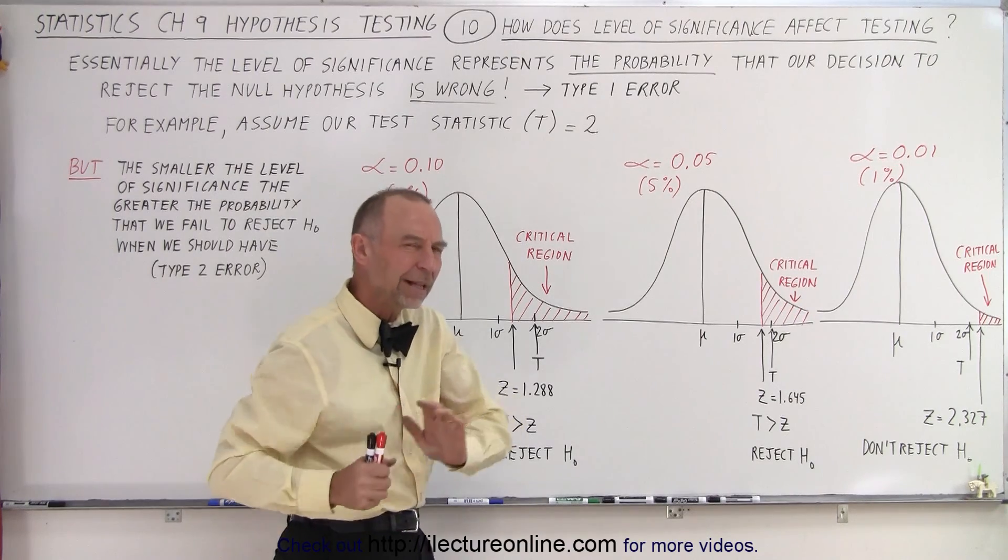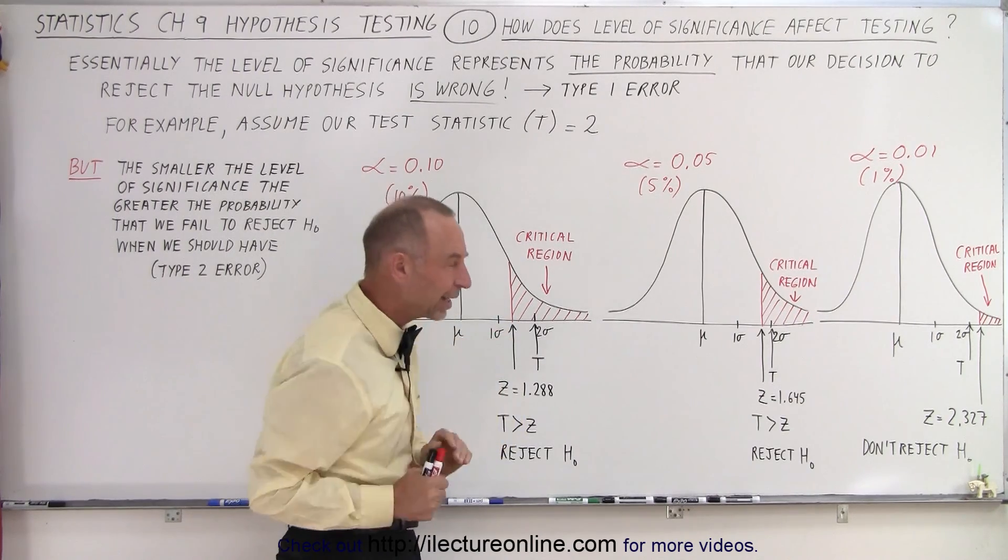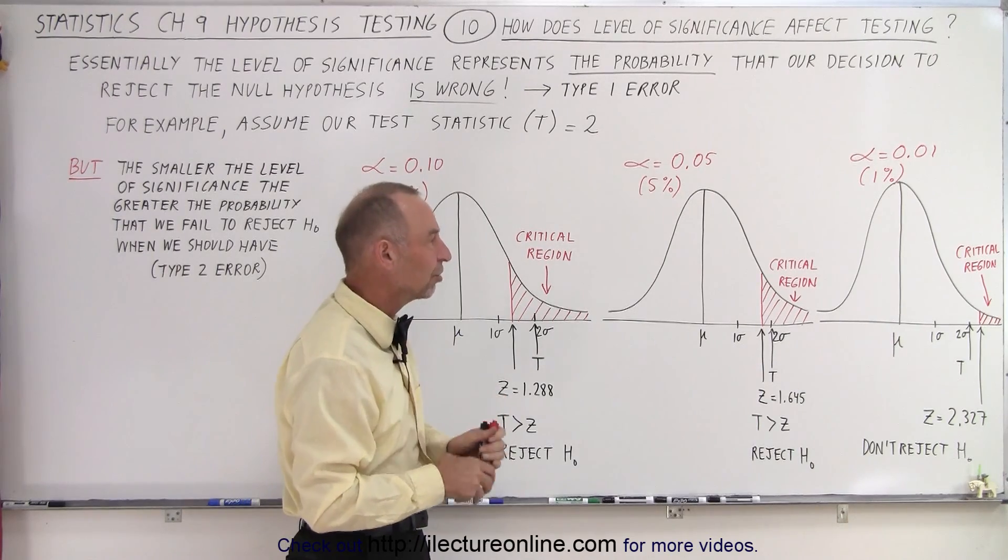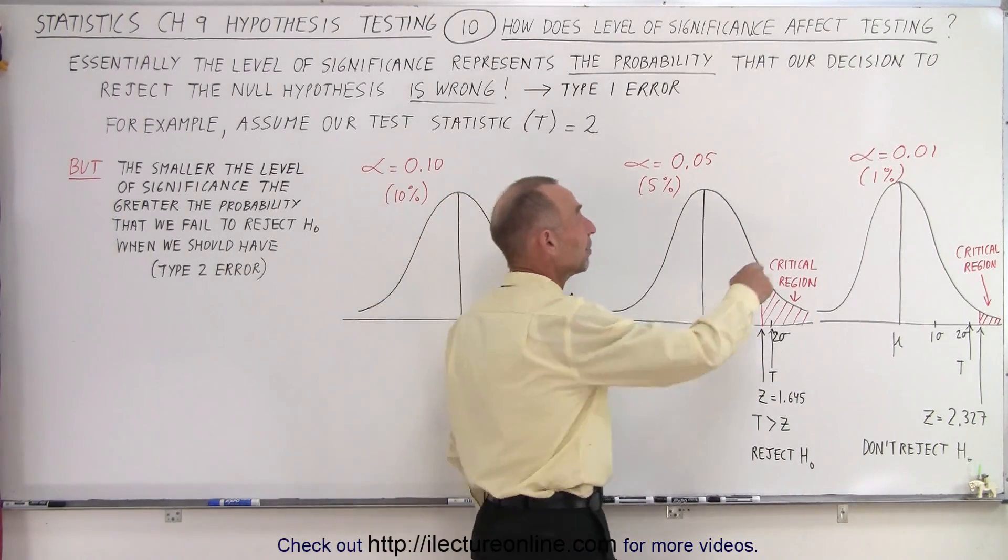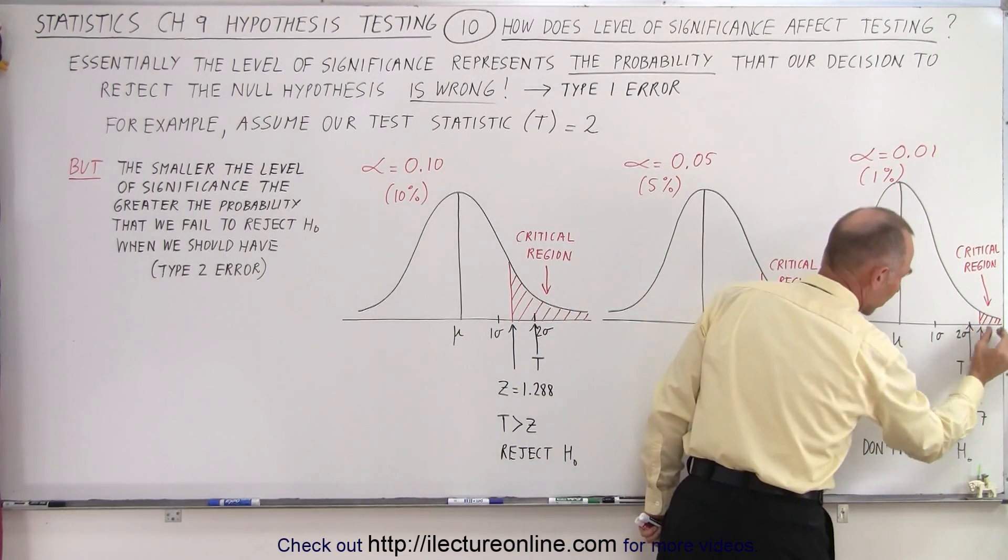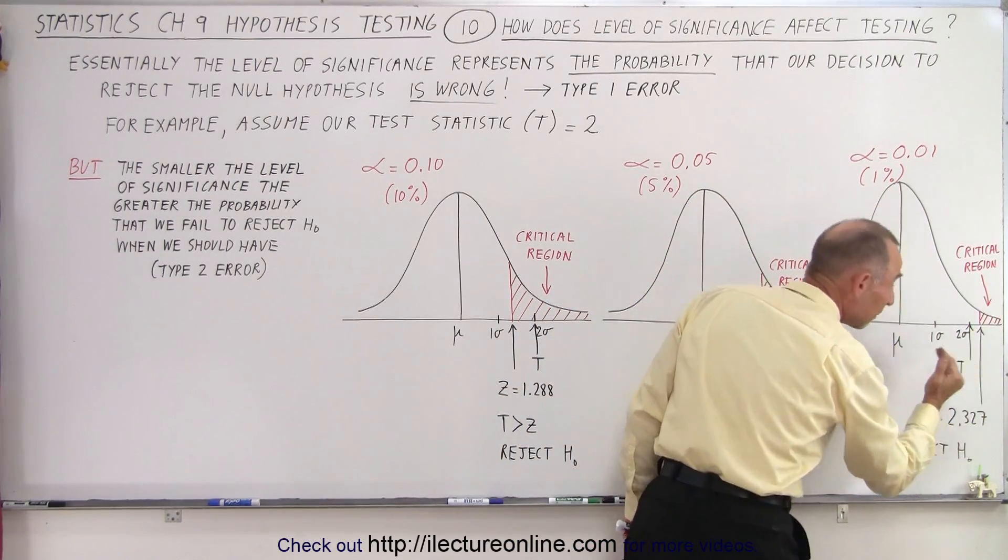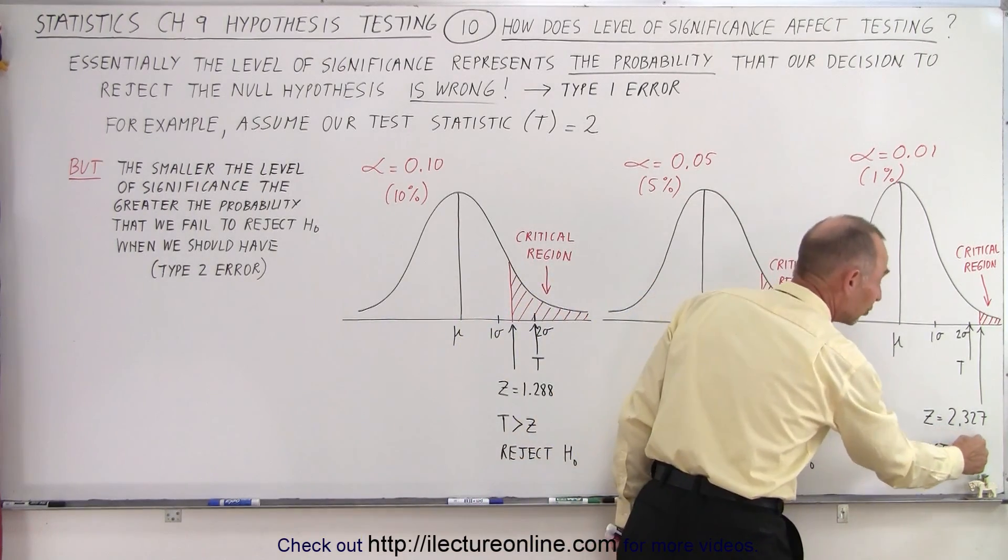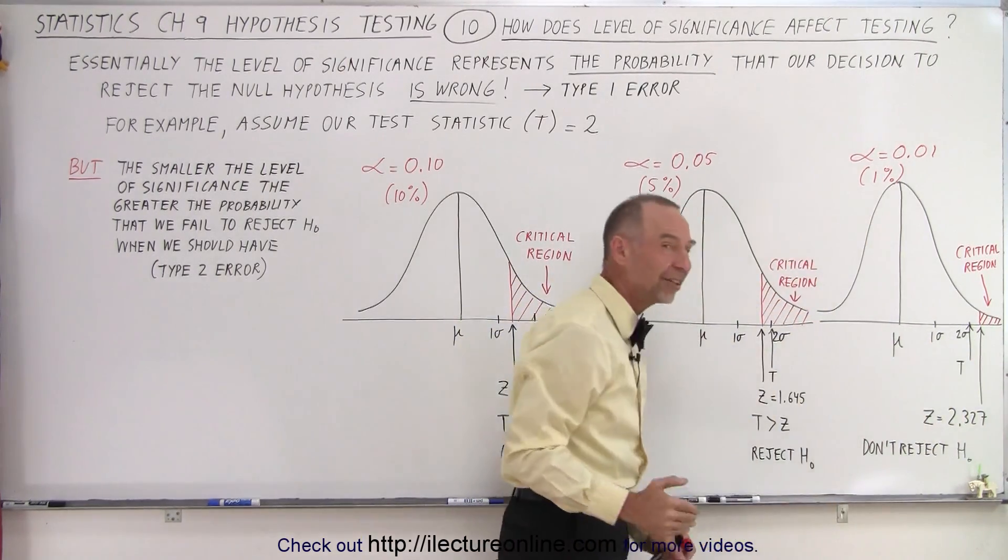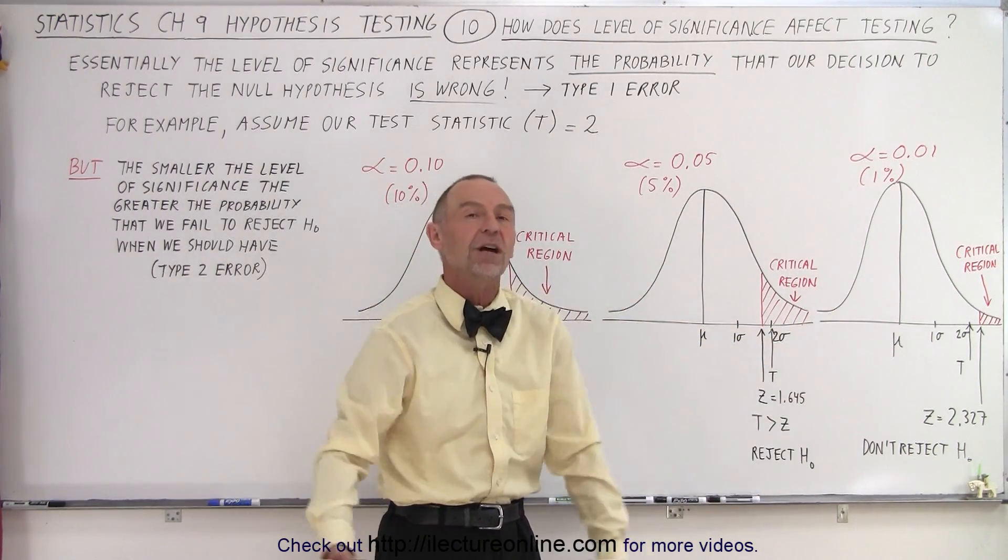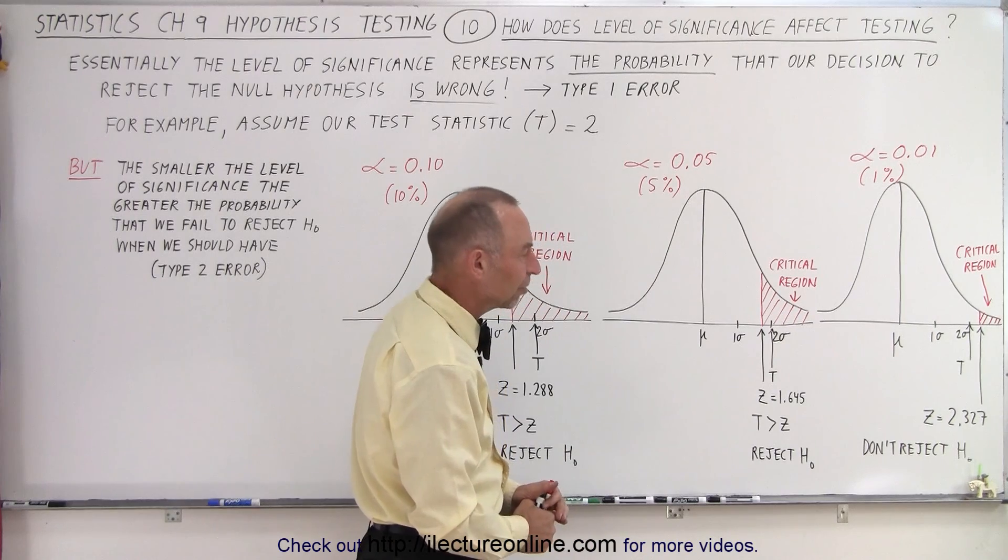Let's say you still don't like the 5%, you want to make it even tighter, you want to be more sure that you didn't make the wrong decision. Now you change your level of significance to 0.01 or 1%. Notice the critical region has shrunk again, but now the beginning boundary of the critical region, the z-score, has grown to 2.327, and your test statistic is smaller than that, so then you end up failing to reject the null hypothesis.